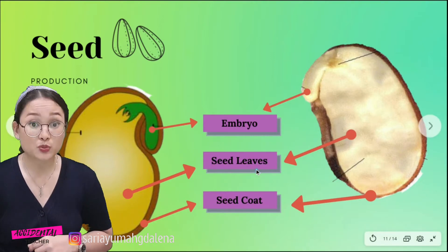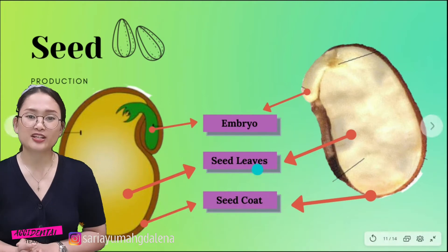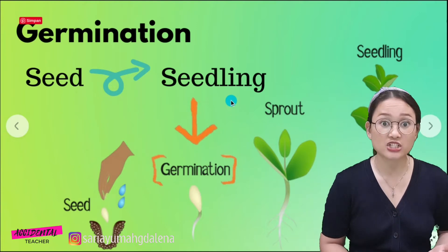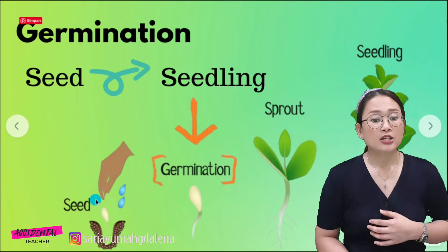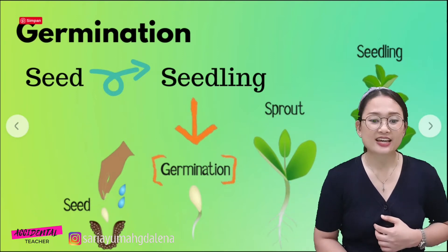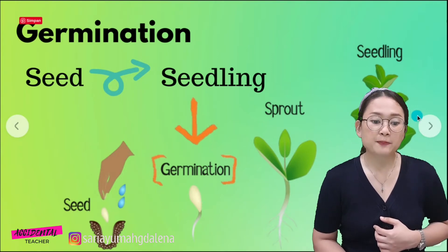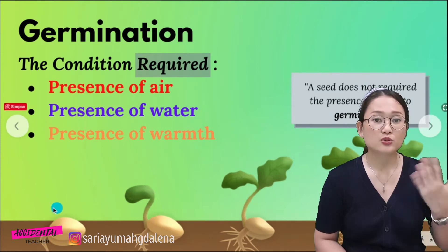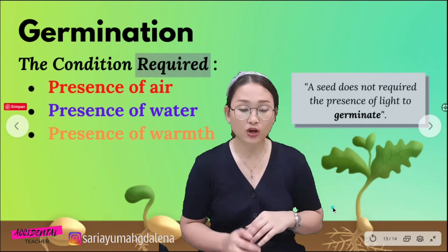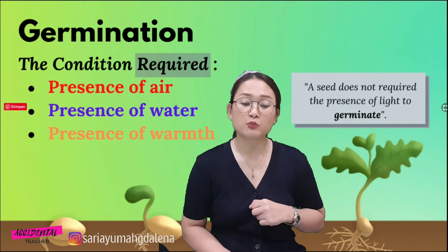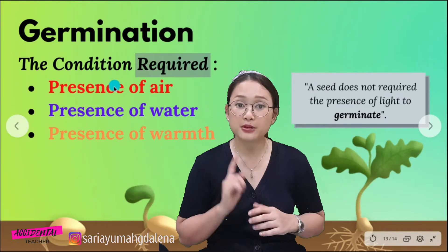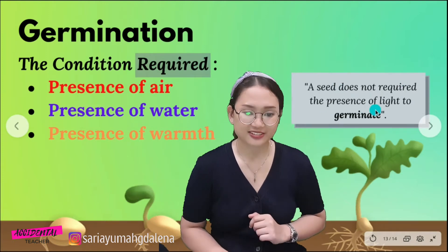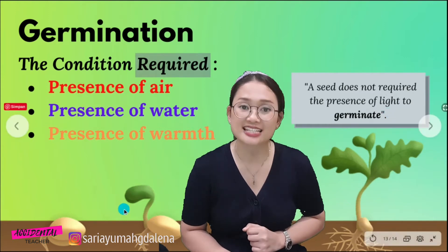These three main parts of the seed are very important to make a new plant. That's why if the seed is broken it cannot grow into a new plant. Before a seed becomes a plant, it undergoes a process called germination. Germination is the process by which a seed becomes a seedling. When we put a seed into the soil, with the presence of air, water, and warmth, the seed will grow into a seedling — but only if these requirements are fulfilled.